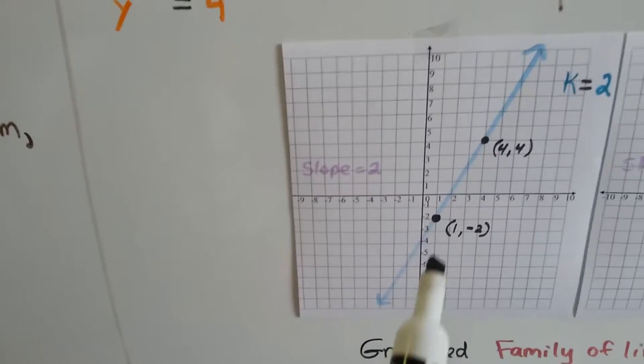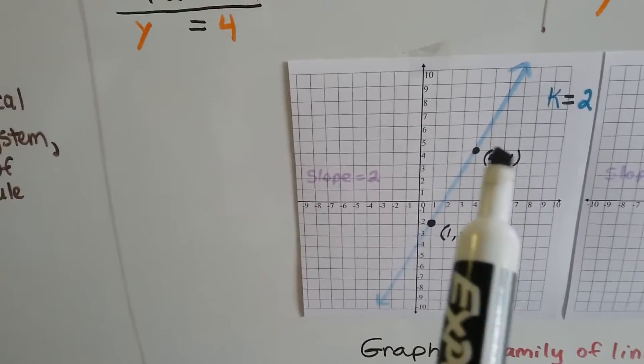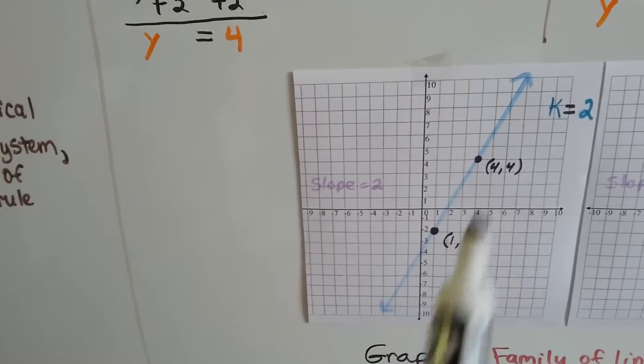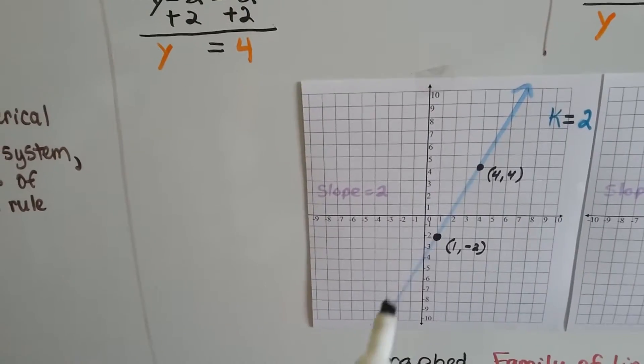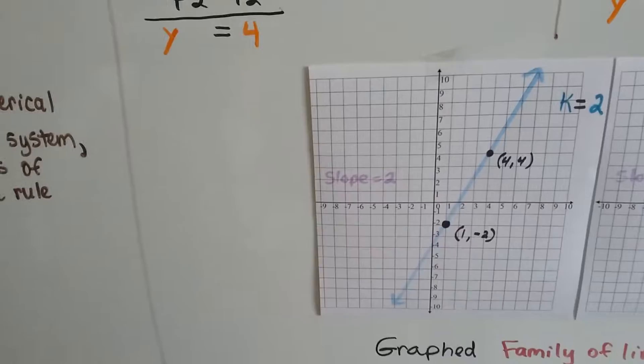We can graph this with our 1 and negative 2, and our 4 and our 4, and we get this line. This is where k equals 2.